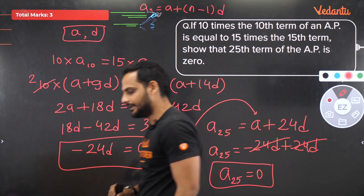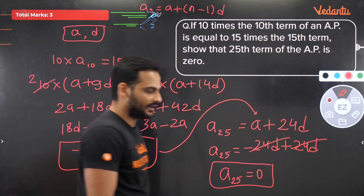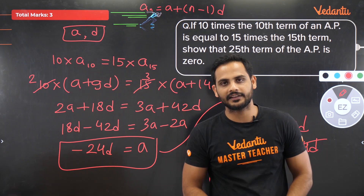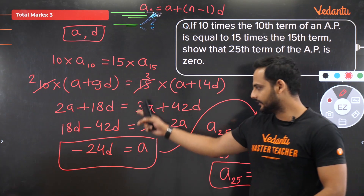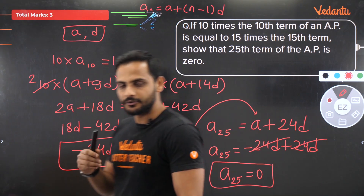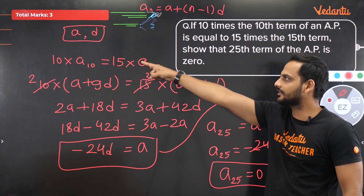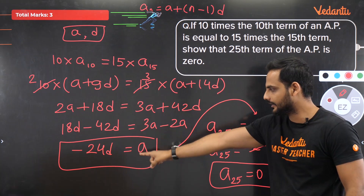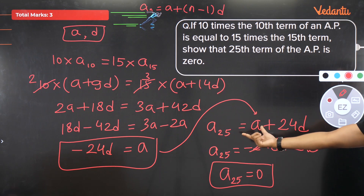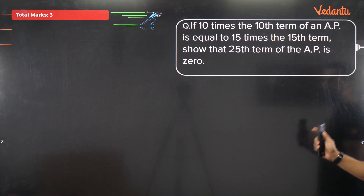Note: without finding the actual values of a and d, we got a relation between them and solved the problem. Sometimes questions are structured so that for any valid a and d the result holds. Here we don't know the specific AP but we've proved the 25th term will always be 0.